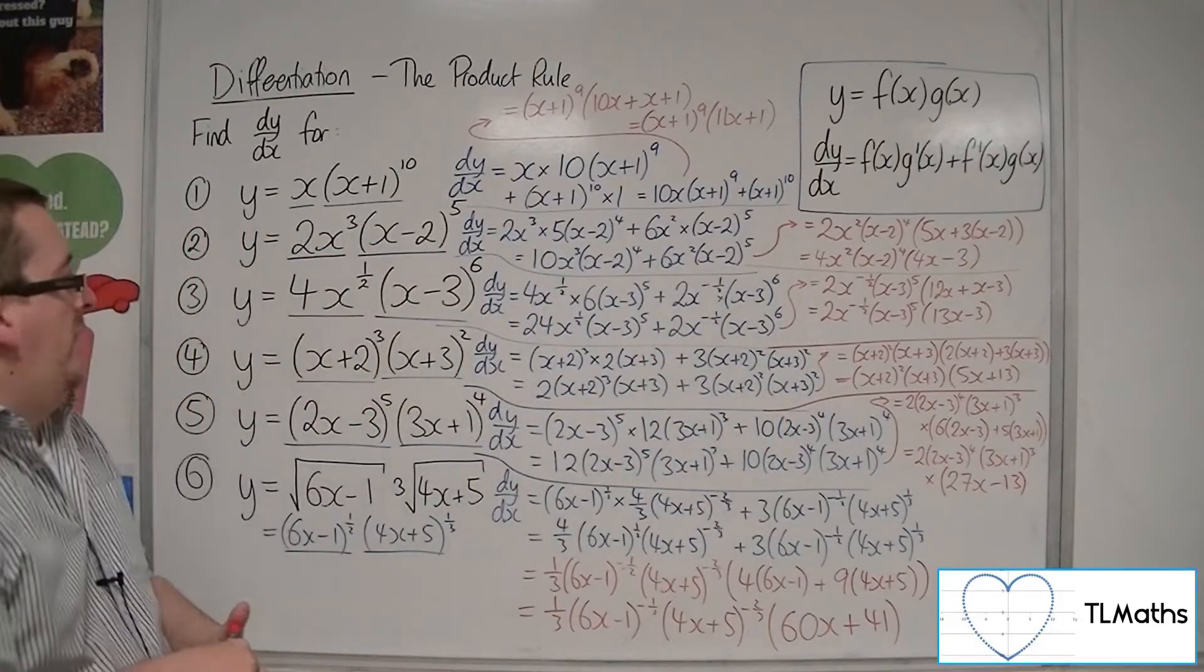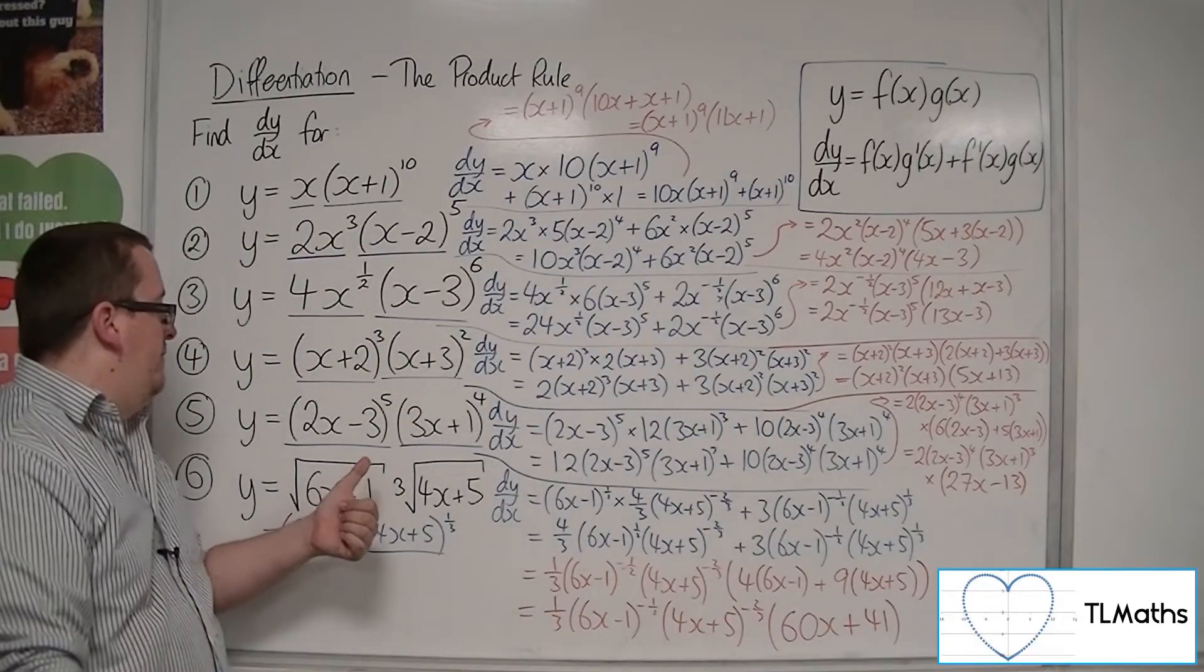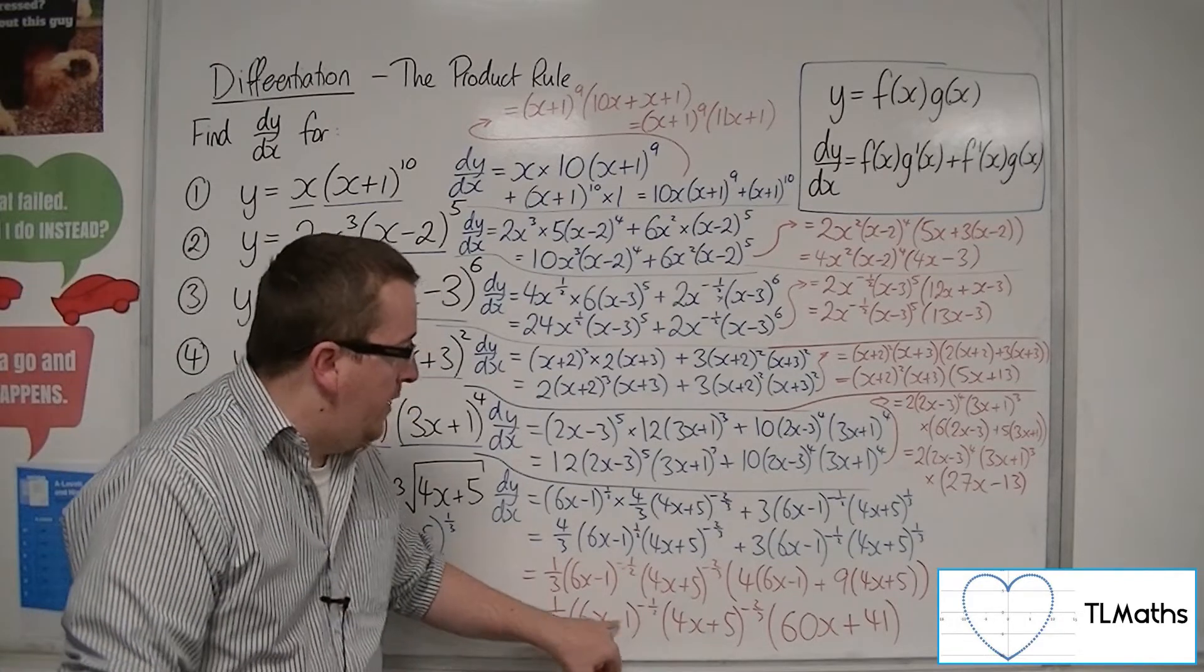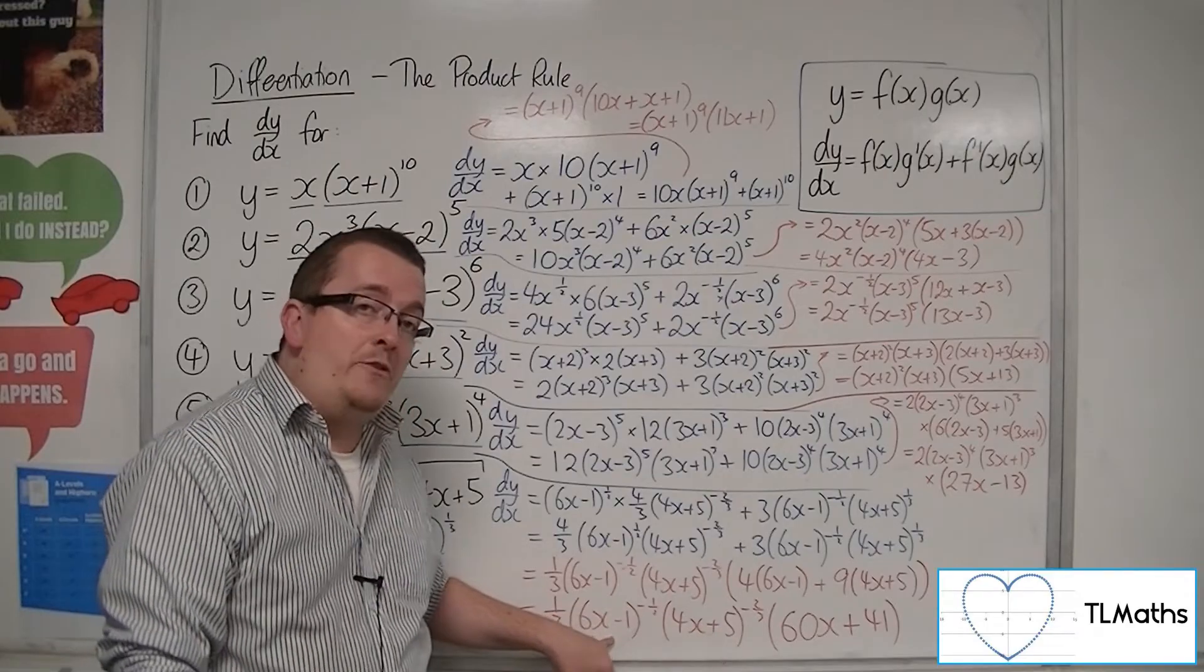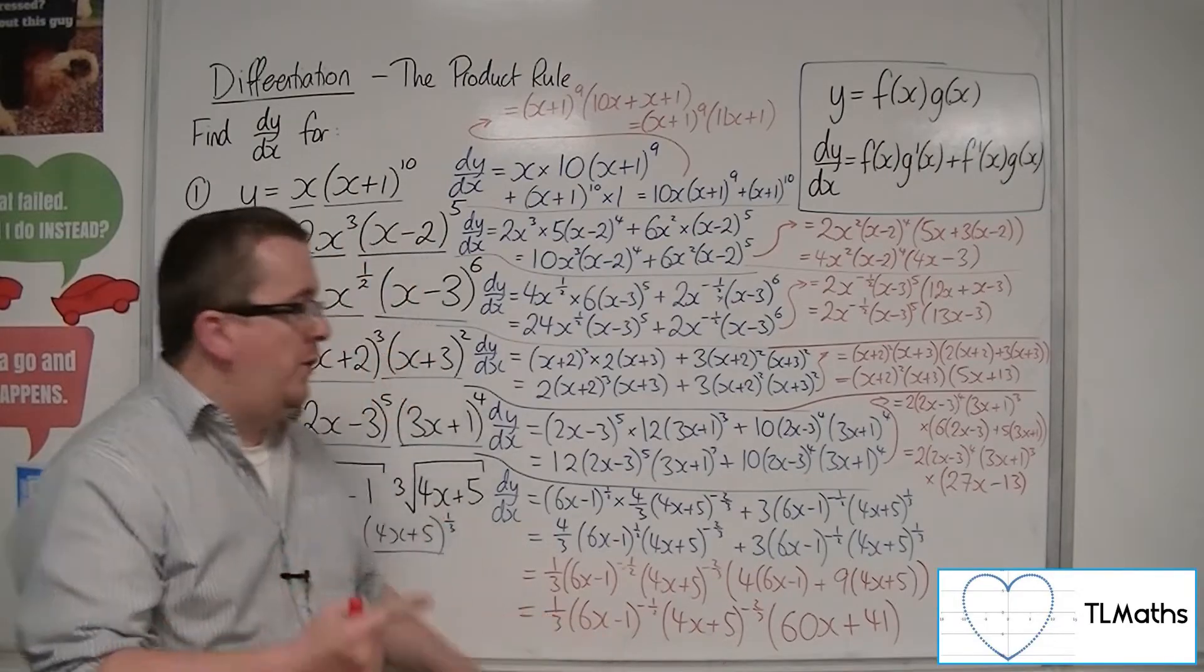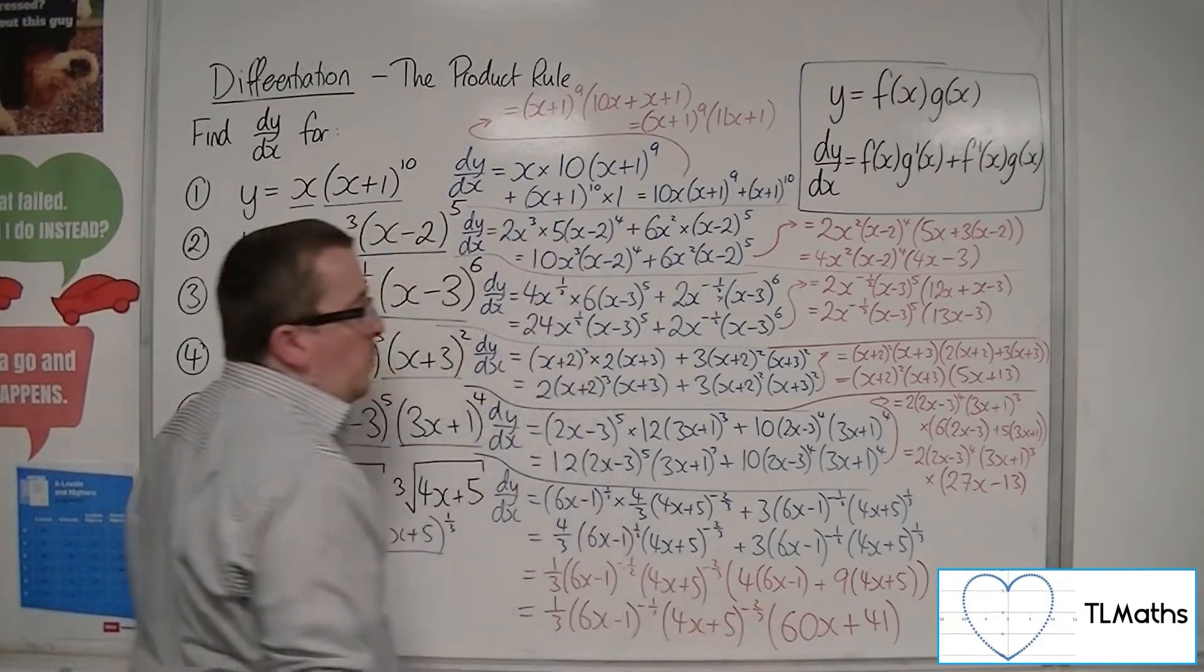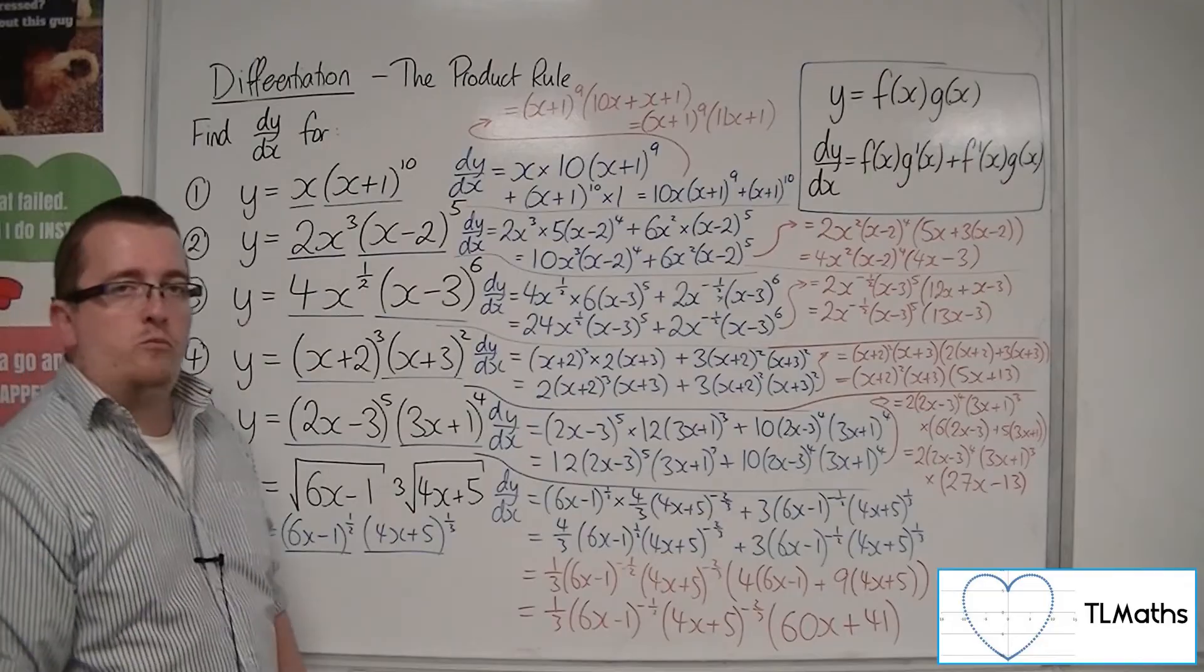So if I was asked to find the stationary points of this curve, there are no stationary points identified from either of those brackets because they're in the denominator, remember. So the only stationary point to this curve is at -41/60 from that bracket.